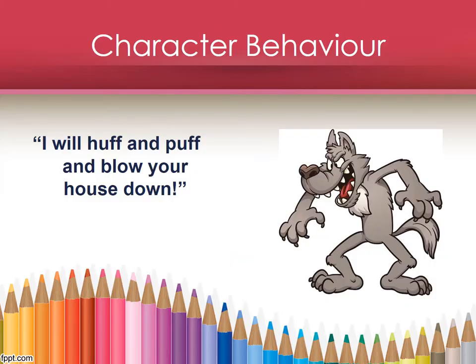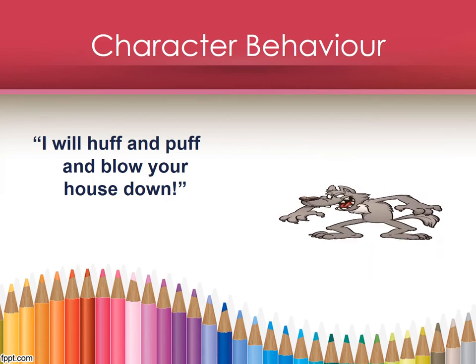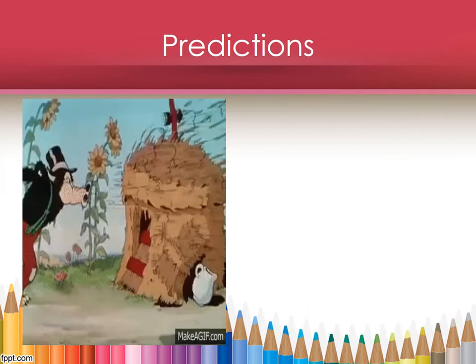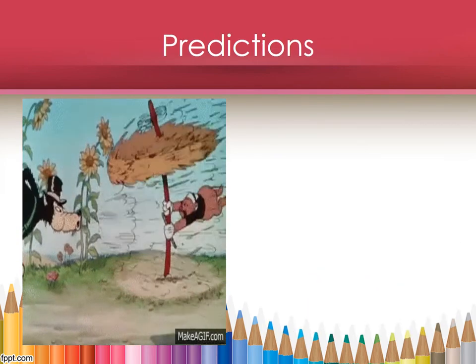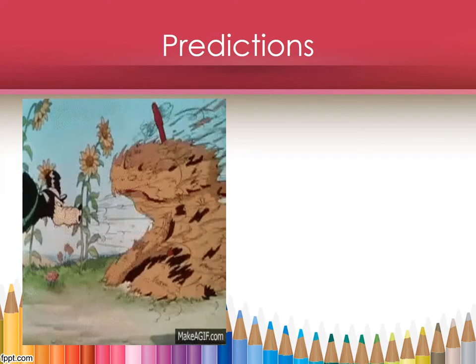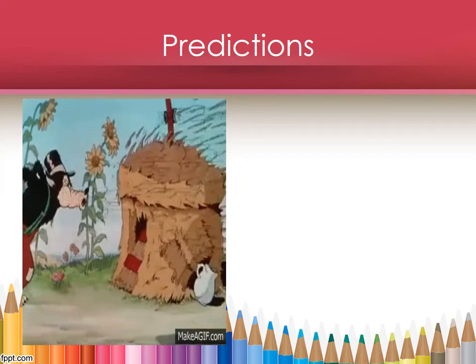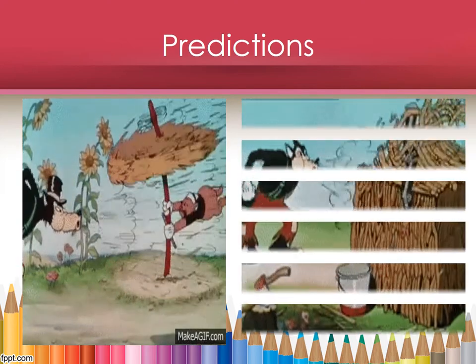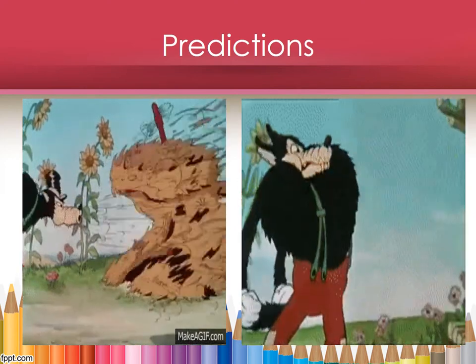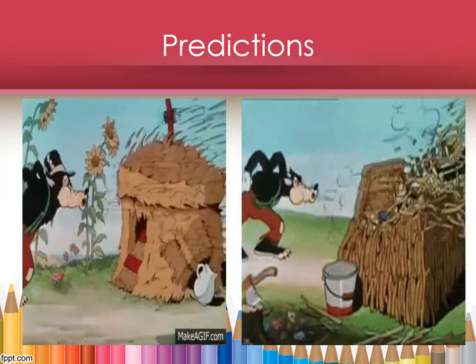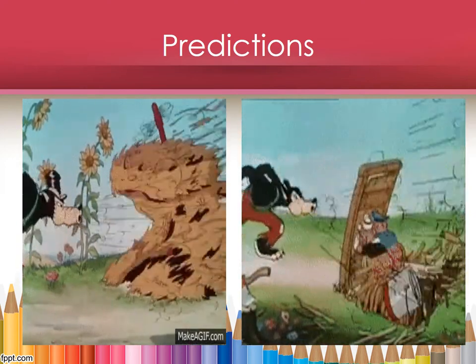Take the big bad wolf for example. You might know that he is a bad character, so you might predict that he'd do something that's not so nice, like eat a pig, or you might look at what he has done already. When the big bad wolf went to the first little pig's house, he huffed, he puffed, and then he blew it down. Then he went to the second little pig's house, he huffed, he puffed, and then he blew it down.